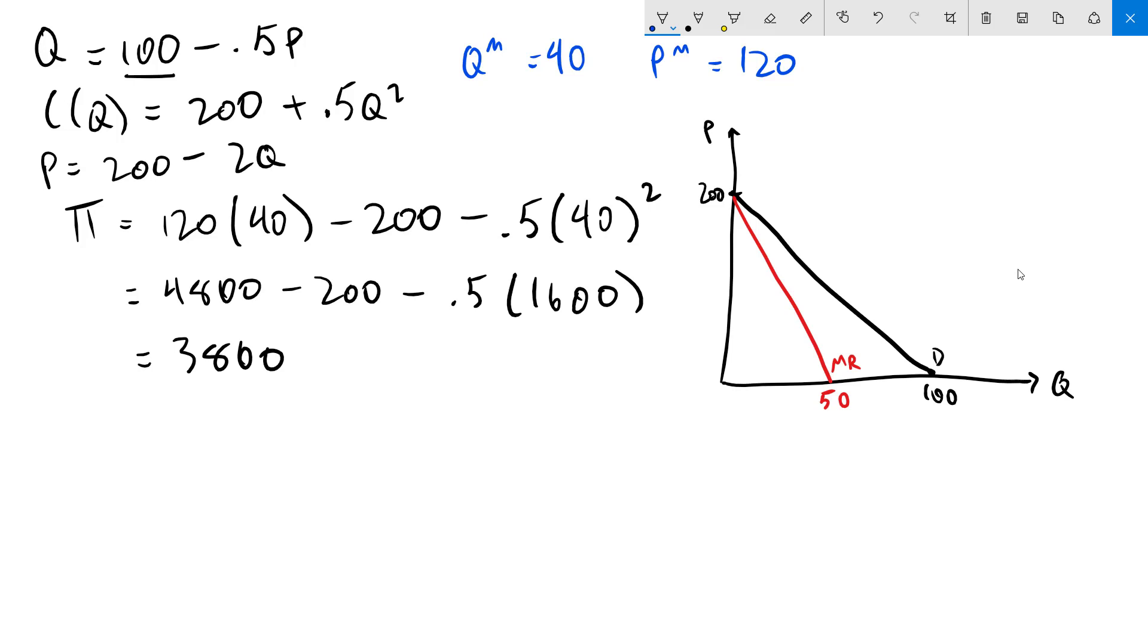Next I will draw my marginal cost curve. It's going to look something like this. The profit maximizing quantity will be where marginal cost equals marginal revenue which is right here. That happens as we know at 40.